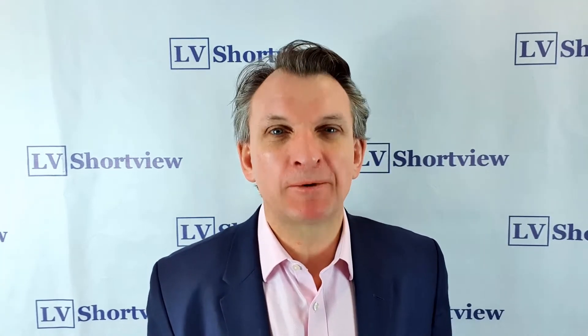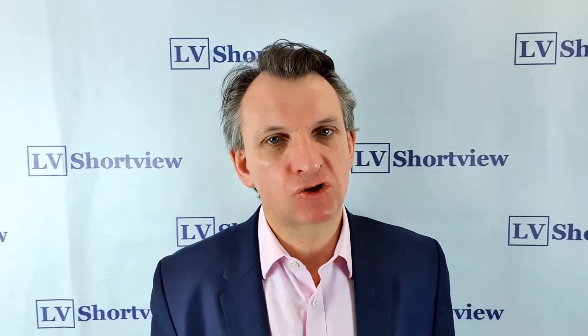In those phases, correlations amongst major market asset prices go to one. The environment becomes dominated by risk-off or risk-on, and in that environment risk appetite models are very good at trading the swings. You can see from the chart in front of you the combined risk appetite model — RAG one and RAG two — during the euro crisis phase in 2010, after the initial sell-off in May, correlated very well with the market for several weeks and a couple of months.